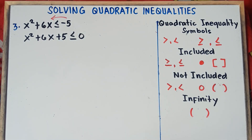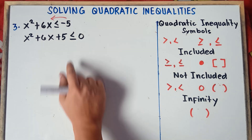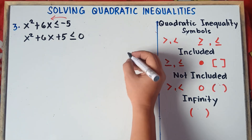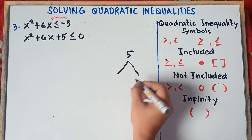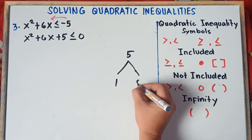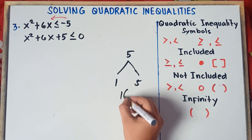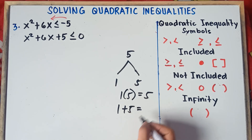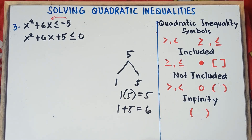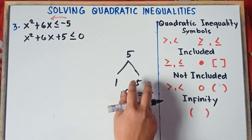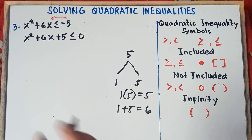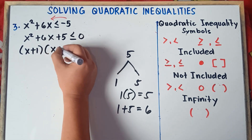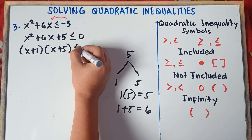Once it is arranged, factor this out. Find two numbers that when multiplied give positive 5, and when combined give positive 6. That would be positive 1 and positive 5, because 1 times 5 is 5 and 1 plus 5 is 6. Therefore the factors are positive 1 and positive 5. So this will be (x + 1)(x + 5) less than or equal to zero.